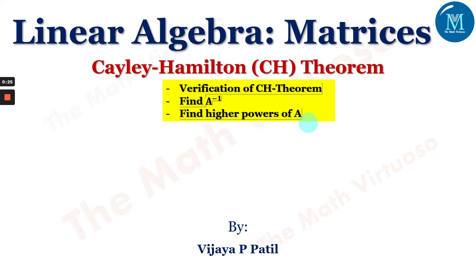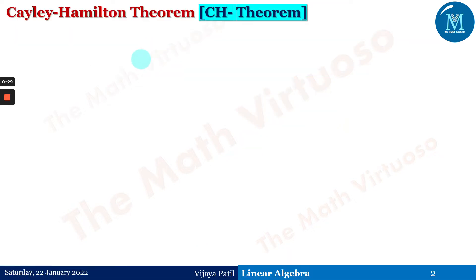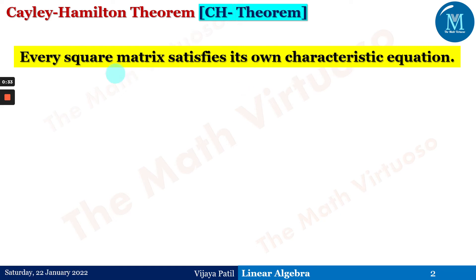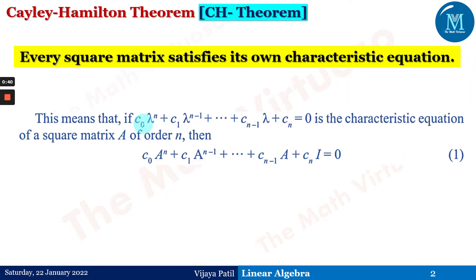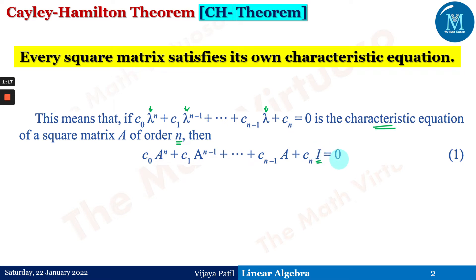So what is exactly the Cayley-Hamilton theorem? The statement goes as: every square matrix satisfies its own characteristic equation. What this means is that if c₀λⁿ + c₁λⁿ⁻¹ + ... + cₙ₋₁λ + cₙ = 0 is the characteristic equation of a square matrix A of order n, then every λ is replaced by capital A, and the constant term is accompanied by I. We form the equation: c₀Aⁿ + c₁Aⁿ⁻¹ + ... + cₙI = 0.